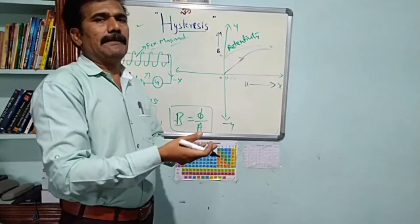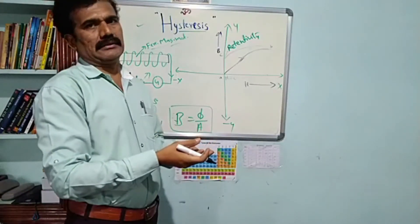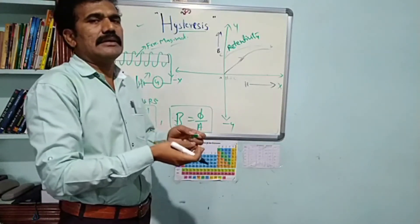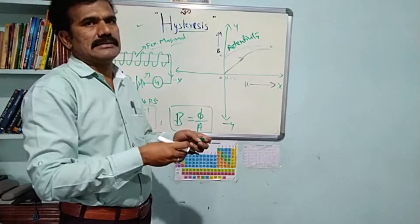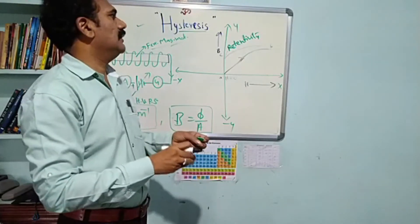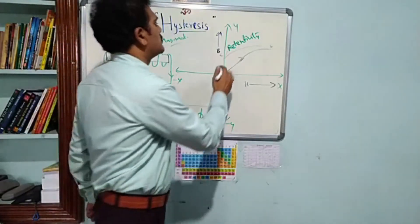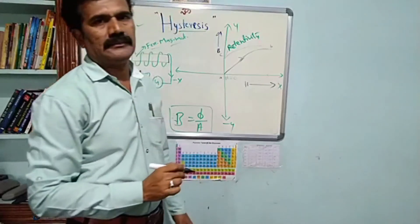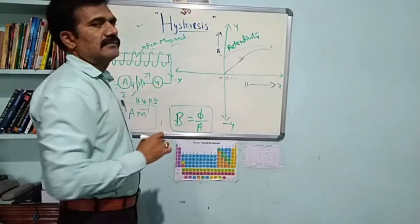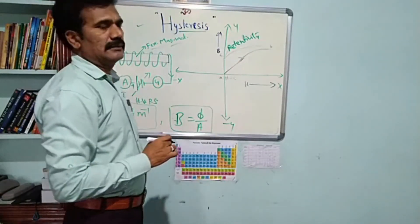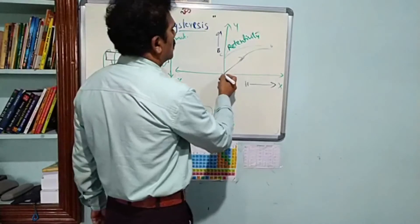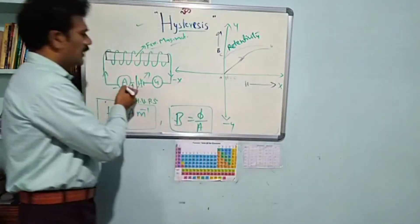This point C is called the retentivity point. Retentivity depends on the residual magnetization — whatever magnetization has remained in the material after the applied field is reduced to zero.